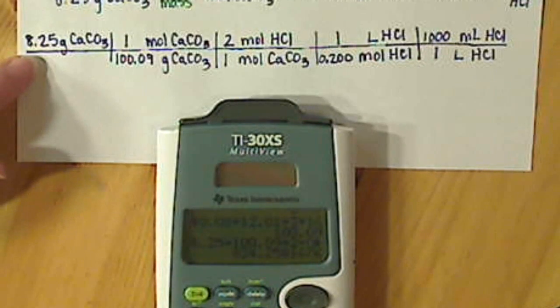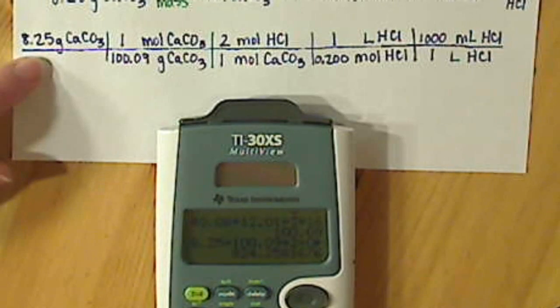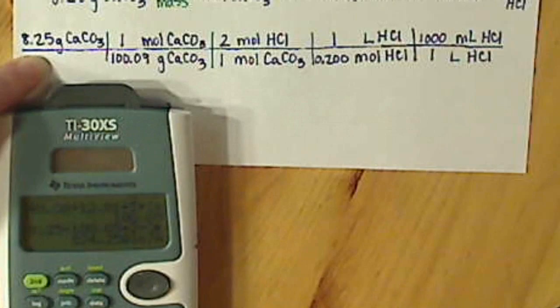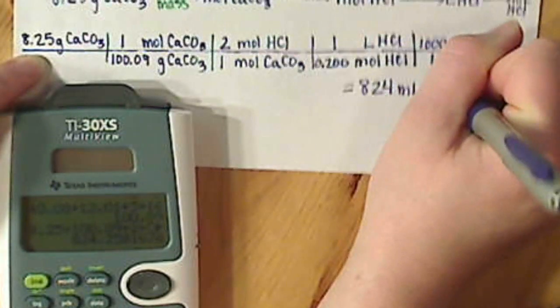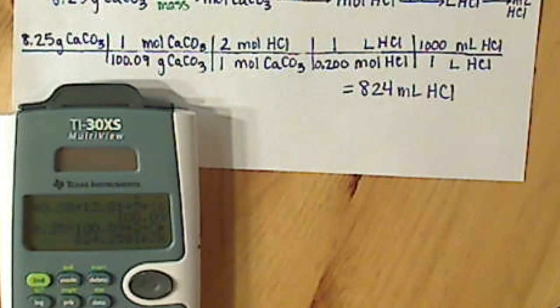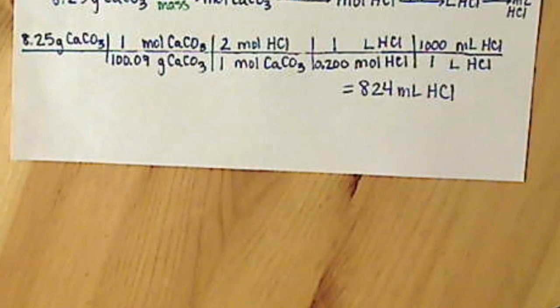For sig figs, I go to what I started my calculation with. Three sig figs there, so I'm going to want three sig figs in my answer. So my 8, my 2, and my 4 are significant. So my final answer is 824 milliliters of HCl. So that's an example of combining your molarity with your stoichiometry. We'll definitely work through some problems. Repetition of this will help you understand. If you have any questions, don't hesitate to ask.